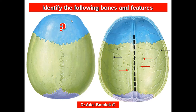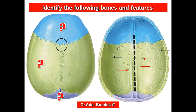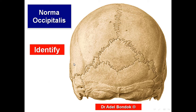This is the frontal bone, this is the parietal bone, and this is the occipital bone. This area is the bregma and this area is the lambda. This is norma occipitalis.